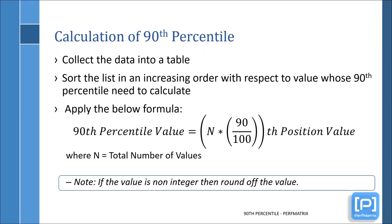The nth position is calculated by multiplying 0.9 with the total number of data available in the list. If you multiply 0.9 with the total number of data and get a non-integer number, then round off the value to the closest integer so that the nth position can be obtained.